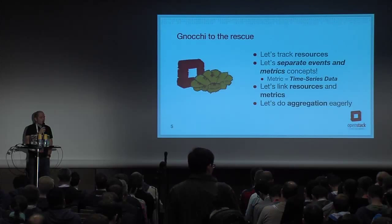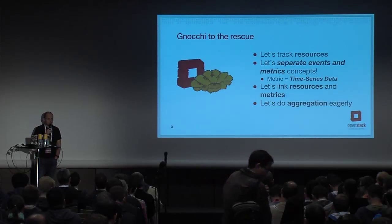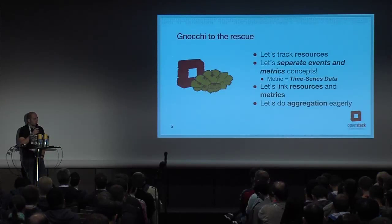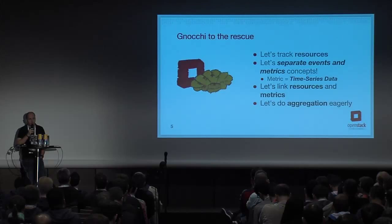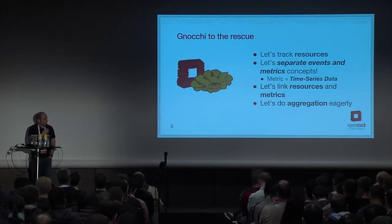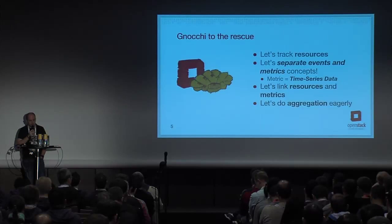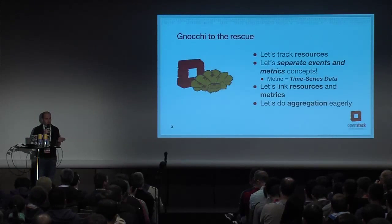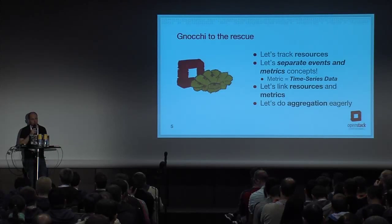In Gnocchi, we don't meter events because something happening — like an instance being resized — is an event, not a metric. We have metrics in Gnocchi, obviously. We have resources and metrics. Metrics are time series data — only a list of timestamp-value pairs. Nothing fancy like we have in Ceilometer. In Ceilometer, you get everything about an instance when you meter CPU. In Gnocchi, you just get the timestamp and the value of the CPU utilization.